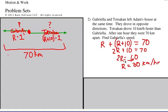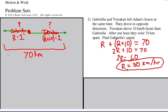Her rate was 30 kilometers per hour — that is her speed, and that's all we need to know. From that we can tell he went 40 kilometers per hour, but we are only being asked for Gabriela's speed.